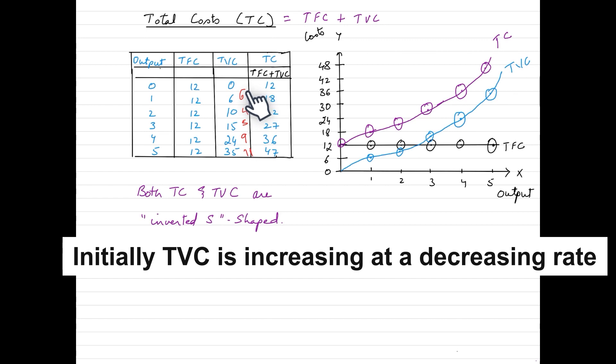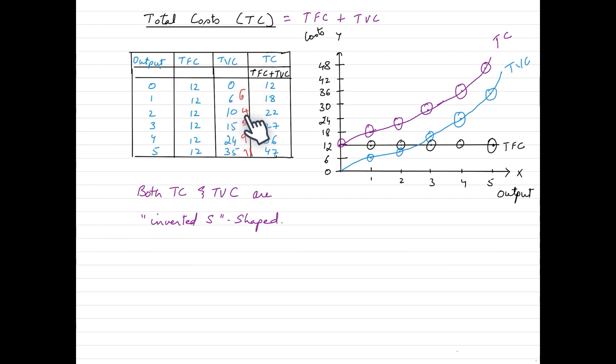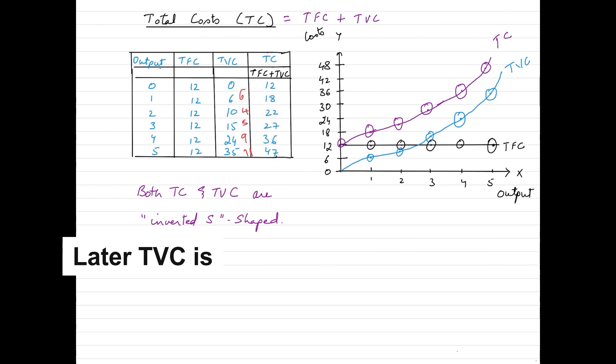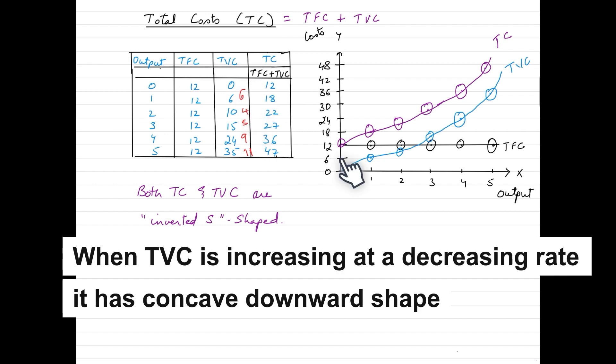initially the TVC is increasing but the rate of increase is falling. It is not increasing in the same proportion. Post this unit, it is on the rising trend. The rate of increase is on a higher end. Because of this rate of increase, you would get this shape. Until the rate of increase is slow, which is it is on the reducing trend, it increased by 6 units. Then it increased by 4 units. So we get a shape which is like this. And we call this shape as concave downwards.